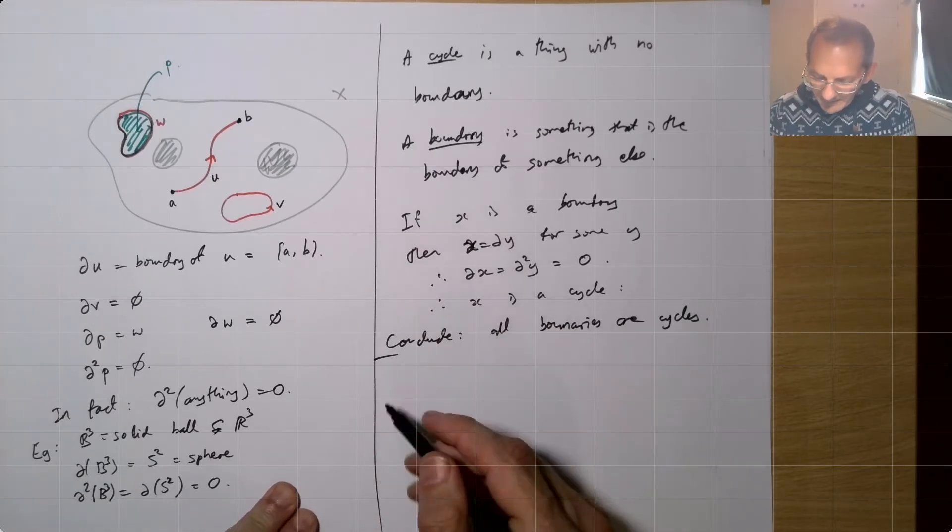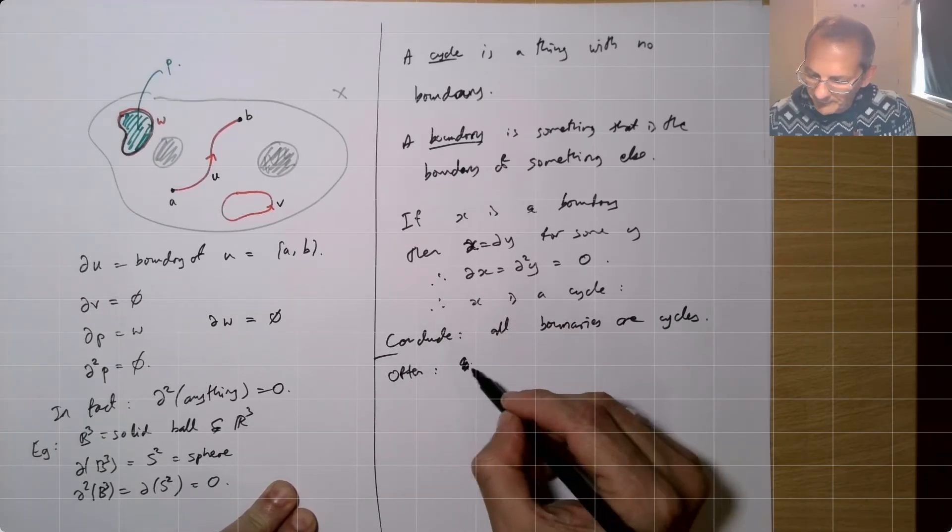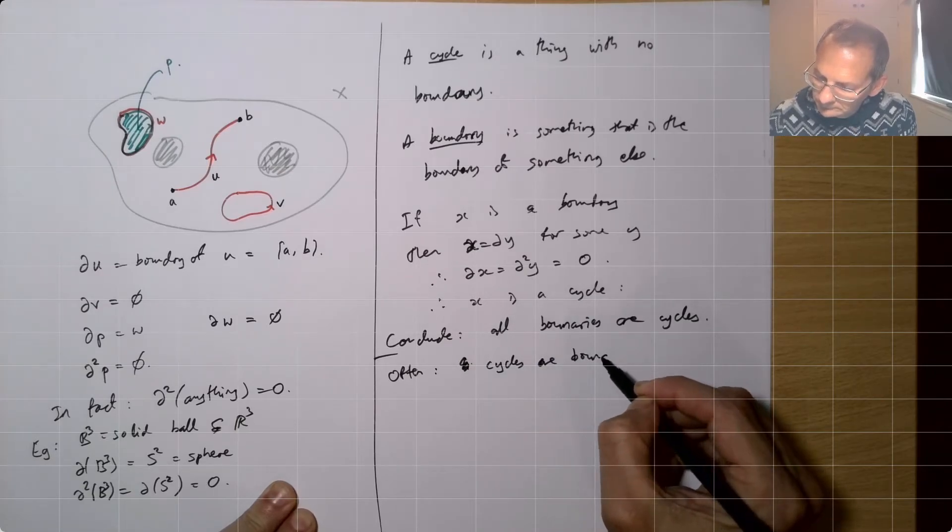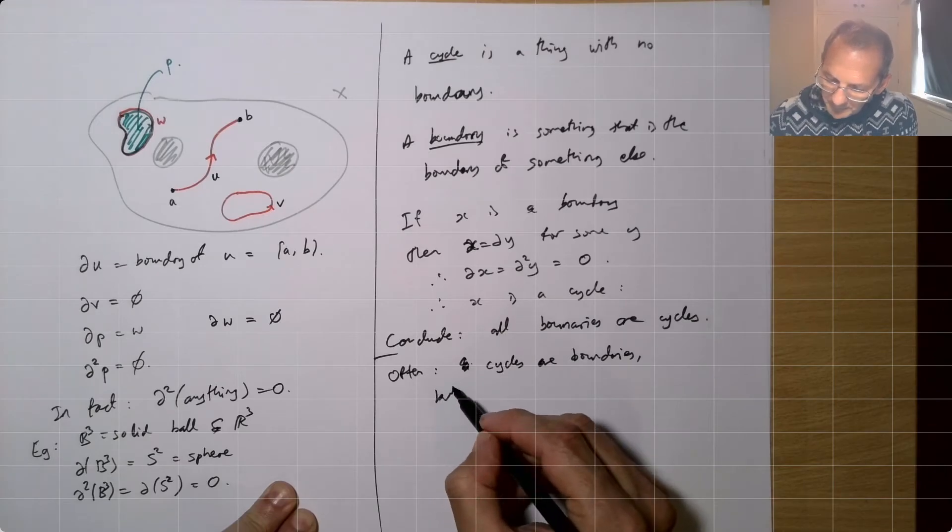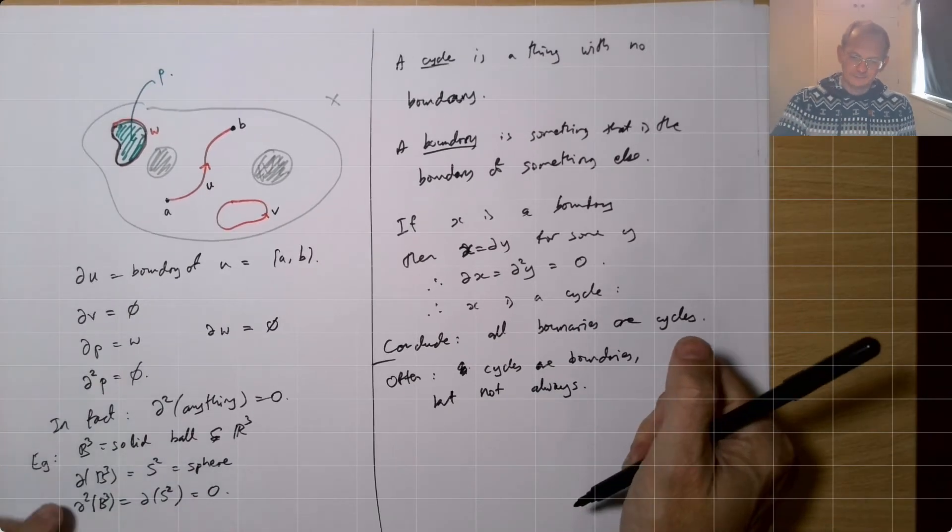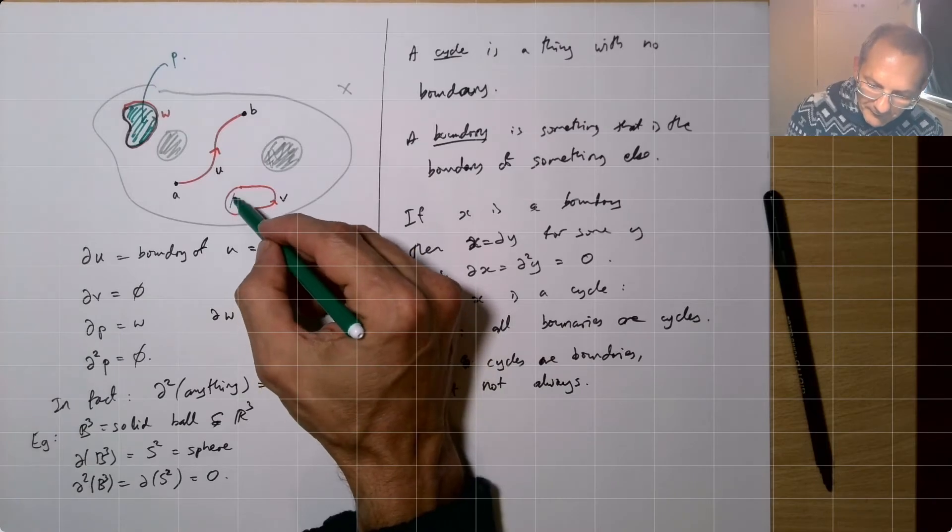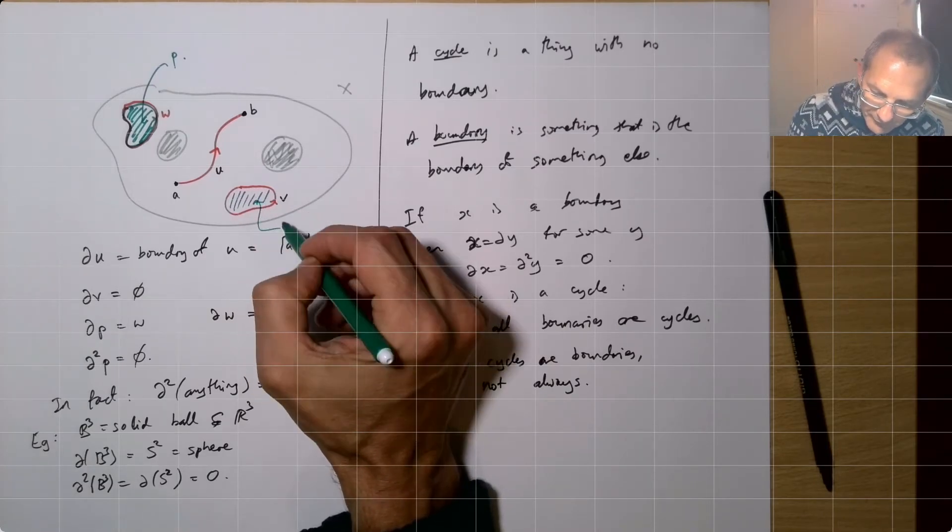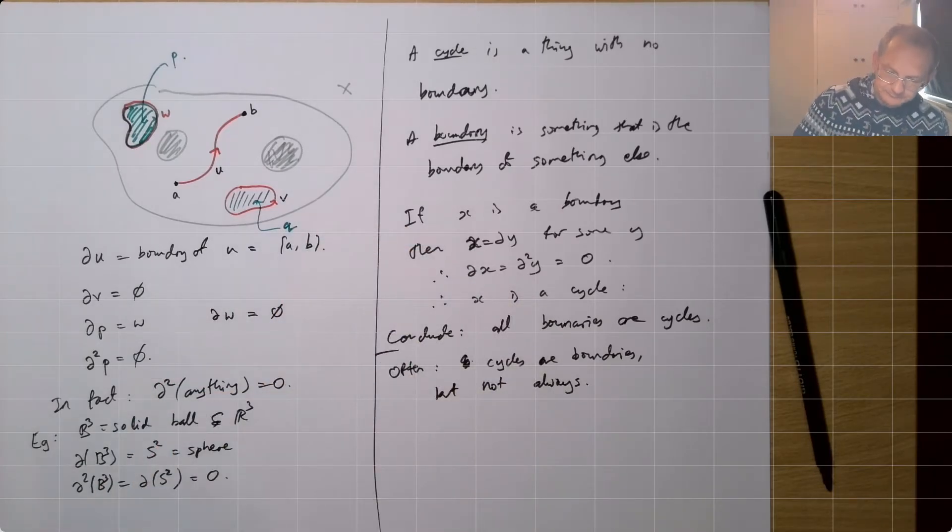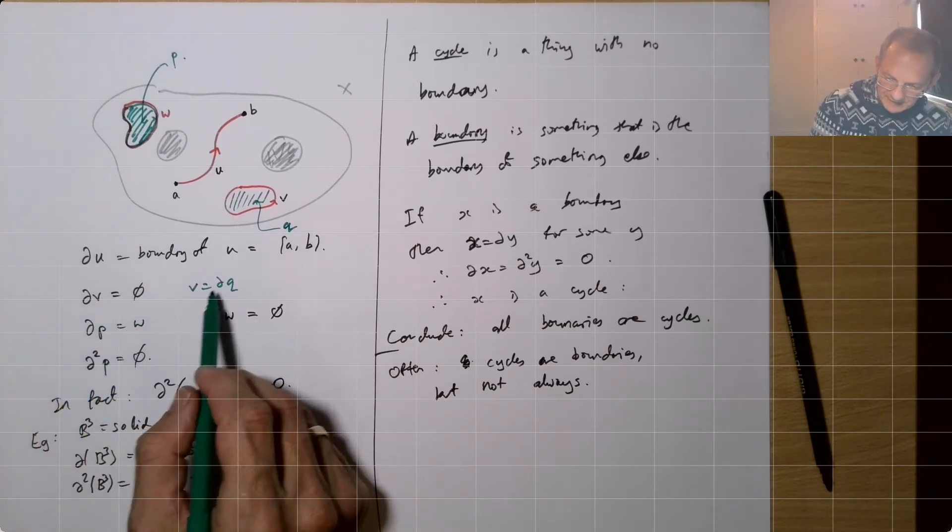And the other way around, often cycles are boundaries. But not always. So when we go back to this V that we had here, that's a cycle as well. We can fill in the middle, call this Q. And this here, V is DQ. So V was a cycle because dV is empty, but V is also DQ.